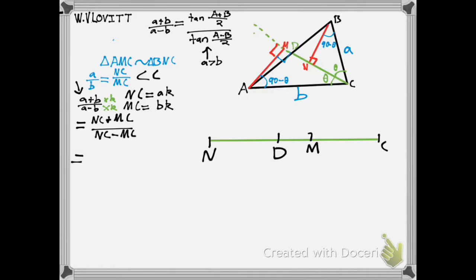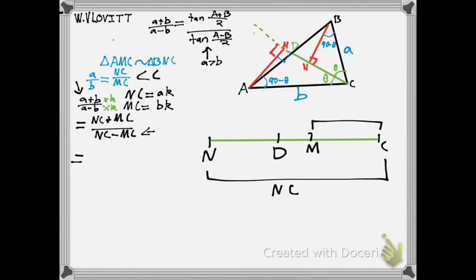In the denominator of our last expression we had NC − MC. Looking at the diagram, here is NC, here is MC, and so NC − MC corresponds to the segment MN — the distance between the two feet of the perpendiculars.